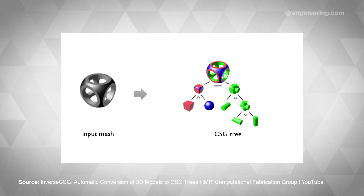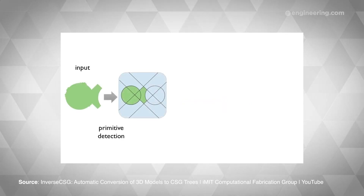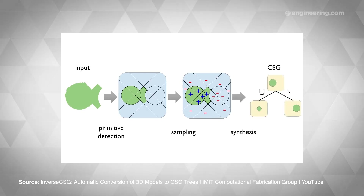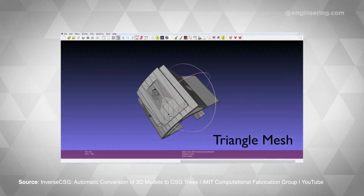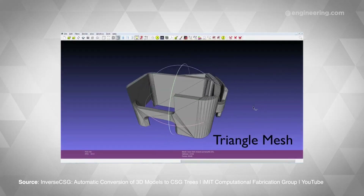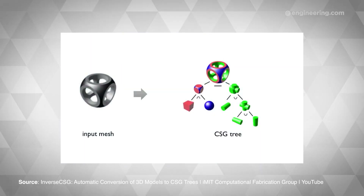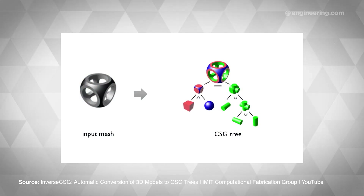Basically, their system does the reverse of what design engineers normally do, disassembling CAD models into individual shapes that can then be edited. Using program synthesis, their system crawls through the triangle mesh to determine the shapes that compose it, and then breaks those shapes down into their component parts. In the end, you get a tree of nodes representing the primitive shapes and how they fit together.